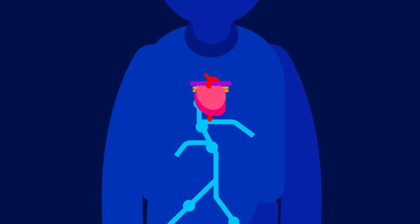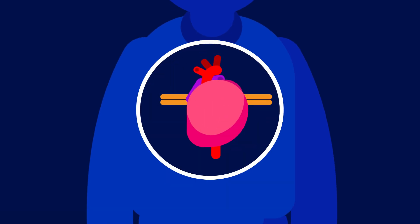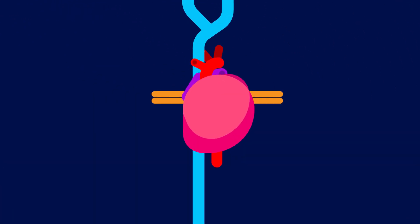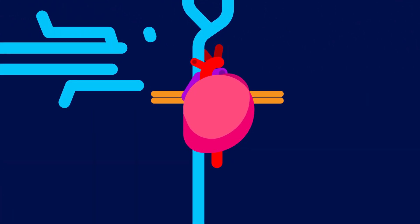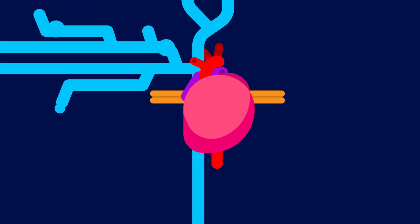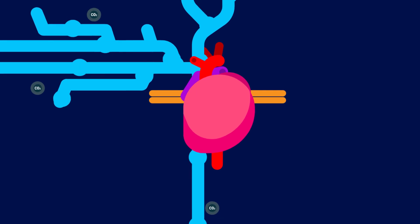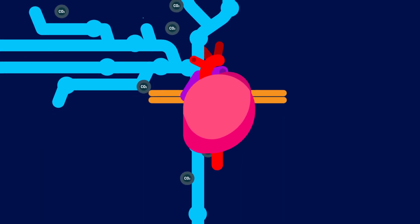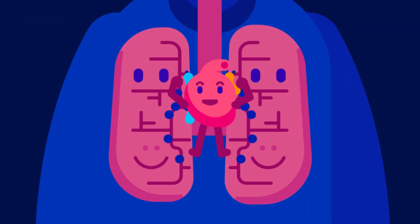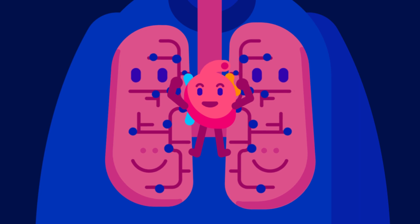The superior vena cava returns deoxygenated blood from the head and arms to the heart. The inferior vena cava returns deoxygenated blood from the lower limbs and organs to the heart. It is important to remember that both the vena cava carry deoxygenated blood and return it to the heart, where the right atrium receives it, and thus the cycle continues.